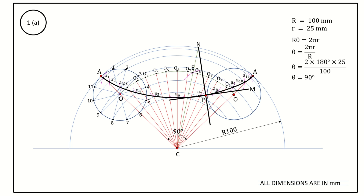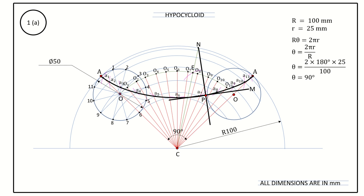Lastly, add dimensions: the smaller circle diameter is 50 mm. If you do not show this dimension, you may lose marks. Also write the name of the curve — hypocycloid. I hope you are clear with the solution. Thank you.